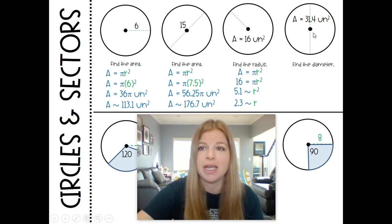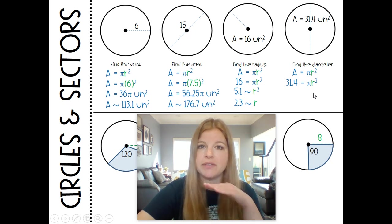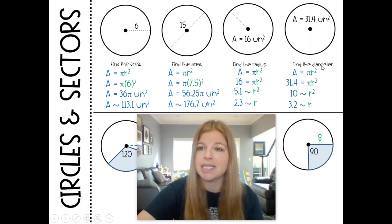Same thing here. If I gave you the area, but then I said find the diameter. So the area is 31.4 equals pi r squared. We'd have to divide both sides by pi. I got about 10. Then take the square root. But then if it says find the diameter, I would need to then double it.